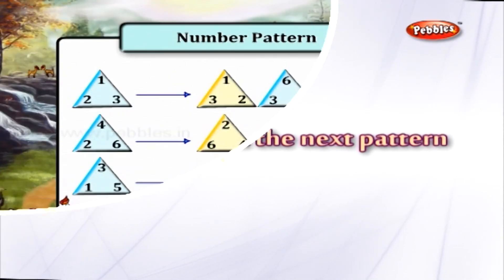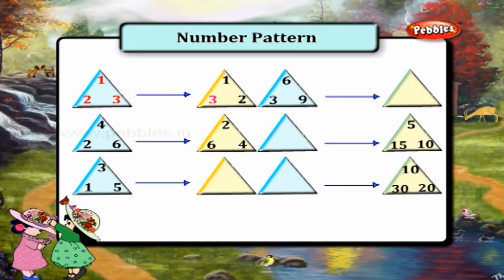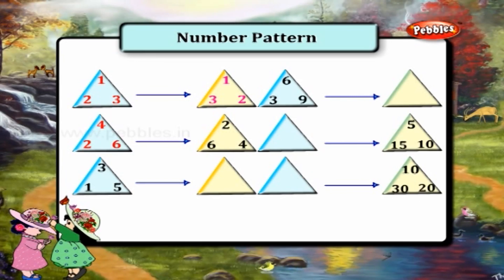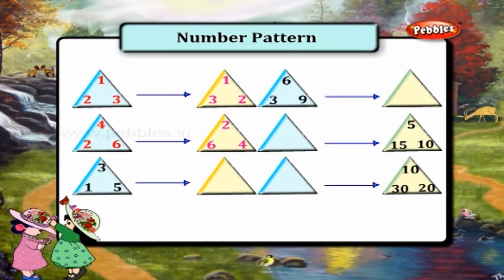Now let's look at the next pattern. In this triangle we have the numbers 1, 2, and 3 in this order. This becomes 3, 1, and 2. In the next set we see 2, 4, and 6 in the first triangle, which becomes 6, 2, and 4 in the next triangle. The pattern is: the numbers are moving their positions in the clockwise direction.